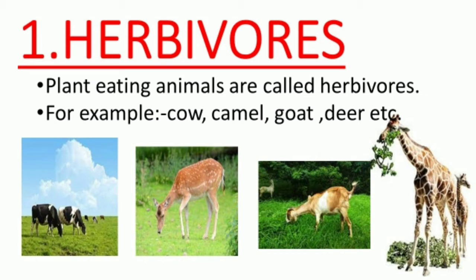Number one: Herbivores. Plant-eating animals are called herbivores. Yaani, wo animals jo plants ko khaate hain, they are called herbivores. For example, cow, camel, goat, deer, etc. Yeh sab animals plants ki leaves aur grass ko khaa kar zinda rehte hain. Inhe hum sab ko bolenge herbivores.